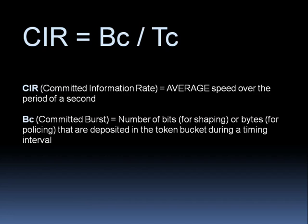That's where our other variables come in. The Bc, that's the committed burst. The committed burst is the number of tokens that we're going to be depositing in the token bucket every timing interval. The units of measure differ a bit: with shaping, the Bc unit of measure is bits, and for policing, the unit of measure is bytes. But the concept is the same - we're going to be dumping in a certain number of bits or bytes into the token bucket every timing interval.